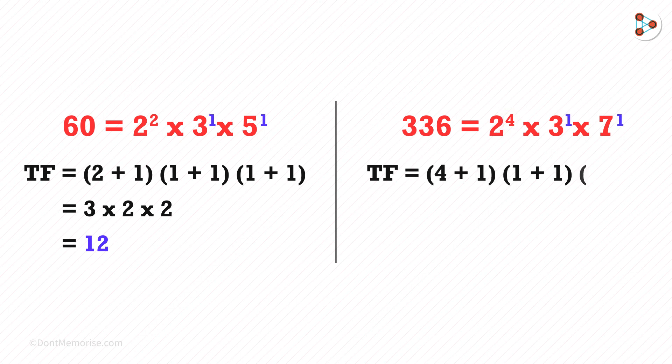So the total number of factors will be the product of 5, 2 and 2. After solving this we get the answer is 20. So there are 20 factors of 336.